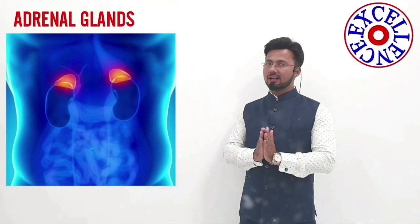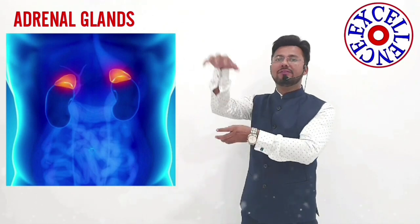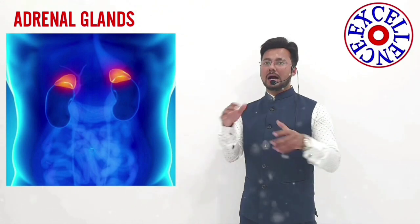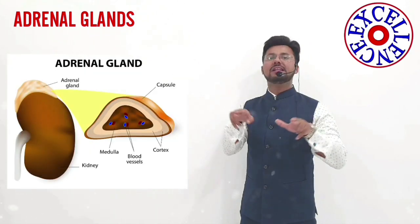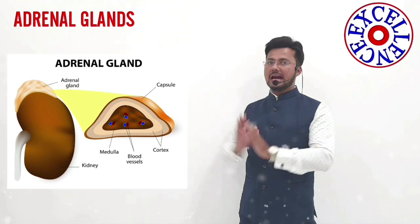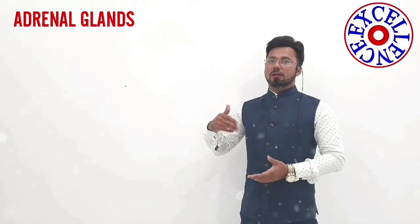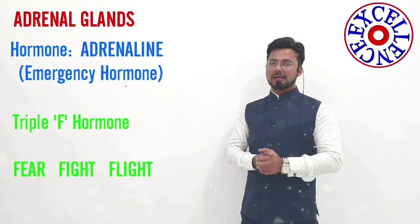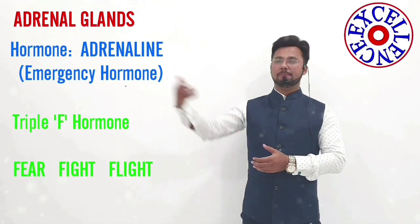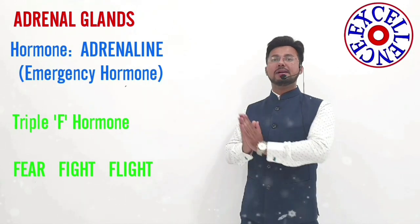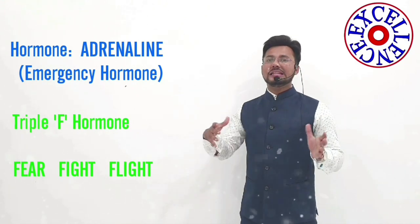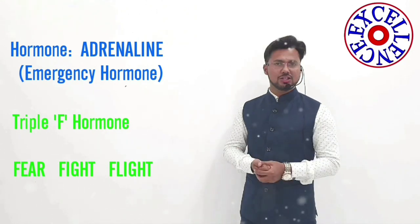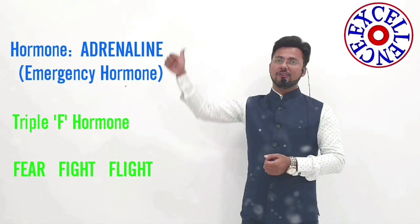The next gland is the adrenal gland. 'Renal' refers to kidney, and 'adrenal' means above the kidney — these glands are situated above both kidneys. It has two parts: the outer periphery is termed the adrenal cortex, and the central part is called the adrenal medulla. One of the very important hormones released by the adrenal medulla is adrenaline, also termed epinephrine. This hormone is nicknamed the emergency hormone, as it increases in the body when it is in any sort of emergency condition. It is also termed the triple-F hormone — fear, fight, and flight hormone.